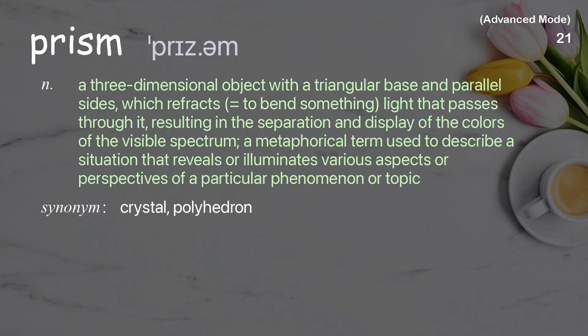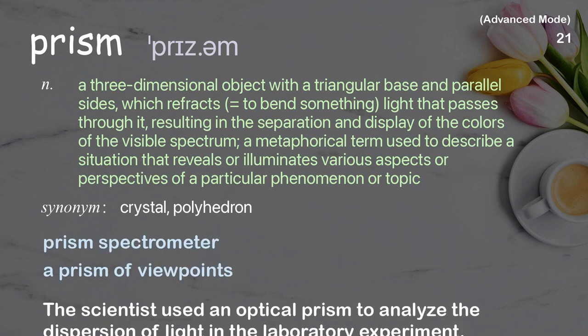Prism: a three-dimensional object with a triangular base and parallel sides, which refracts (bends) light that passes through it, resulting in the separation and display of the colors of the visible spectrum. Also used metaphorically to describe a situation that reveals or illuminates various aspects or perspectives of a particular phenomenon or topic. Examples: prism spectrometer; a prism of viewpoints. The scientist used an optical prism to analyze the dispersion of light in the laboratory experiment.